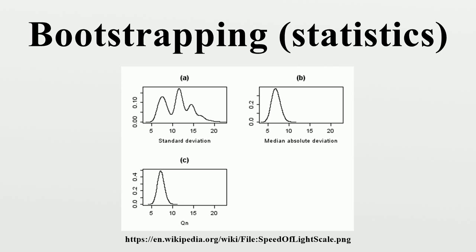The simplest bootstrap method involves taking the original data set of n heights and, using a computer, sampling from it to form a new sample that is also of size n. The bootstrap sample is taken from the original using sampling with replacement, so assuming n is sufficiently large, there is virtually zero probability that it will be identical to the original sample.